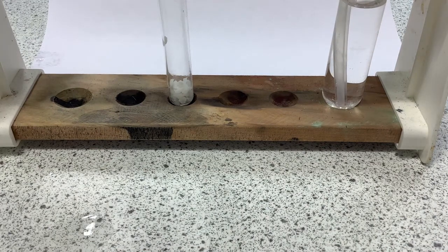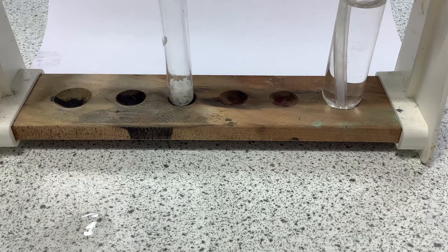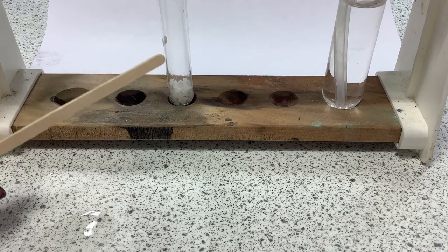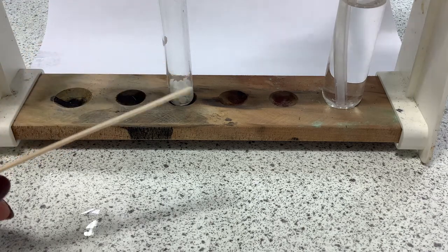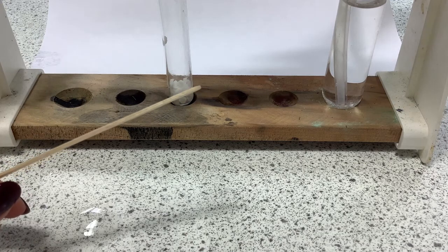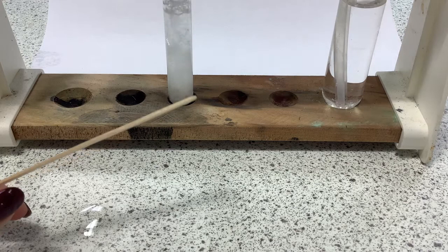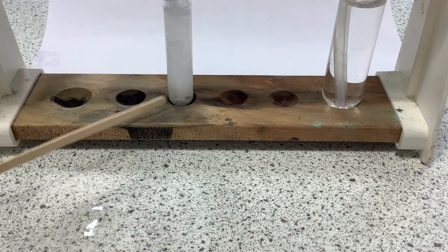So, this is a demonstration to show you the reaction between a carbonate and acid. So in this test tube here are some pieces of calcium carbonate. And what I'm going to do is I'm going to add some acid to that carbonate, and this is hydrochloric acid. Now, you can see that the reaction starts to fizz, but the gas produced is colorless.